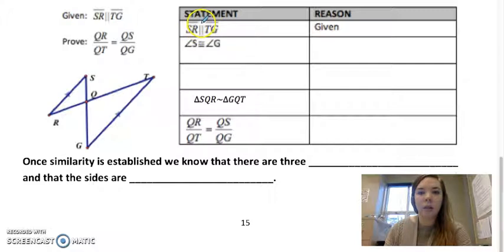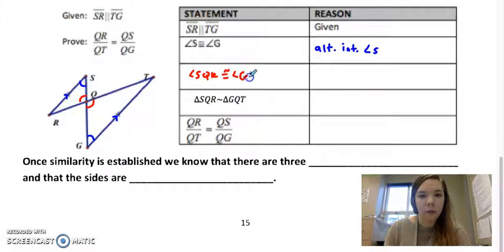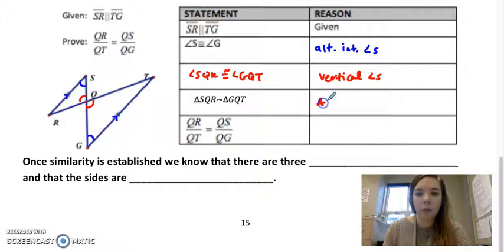All right. SR is parallel to TG. So they marked that here for us that it was given. S is congruent to G. And since we have parallel lines, those are alternate interior angles. Then we can also say that angle SQR and GQT are congruent because they are vertical angles. So then our two triangles are similar by angle, angle. This one is the most common.